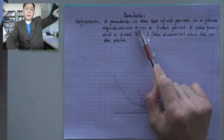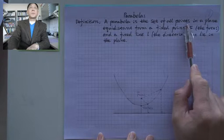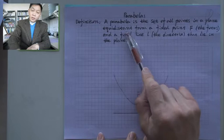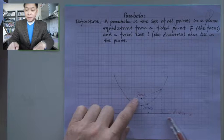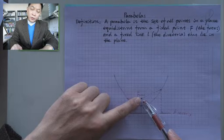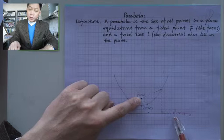A parabola is the set of all points in a plane equidistant from a fixed point F and a fixed line L. This line is fixed. The fixed point is called the focus, and the fixed line is called the directrix.